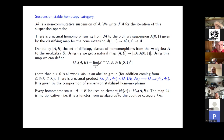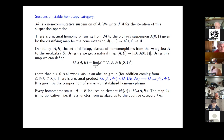We have two versions of suspension. First, the classical suspension: functions on the unit interval vanishing at both endpoints. But JA is also another version of a suspension, as we will see.